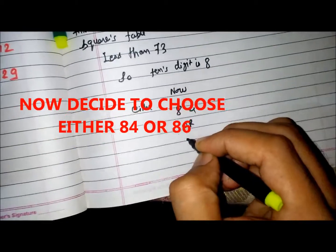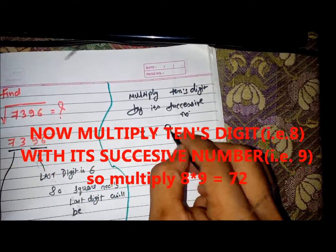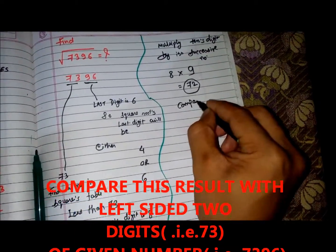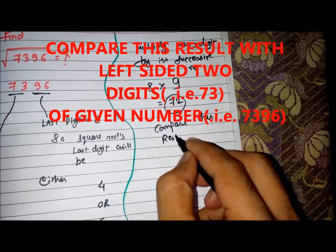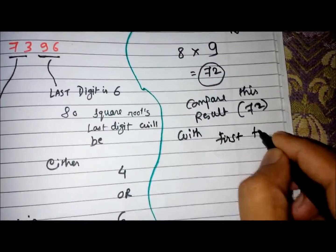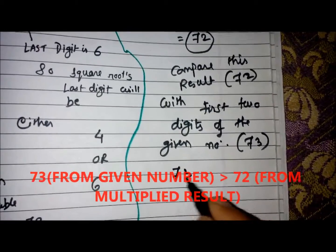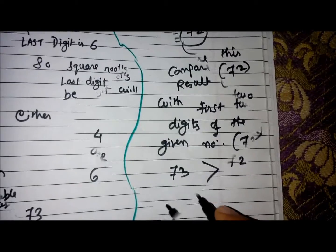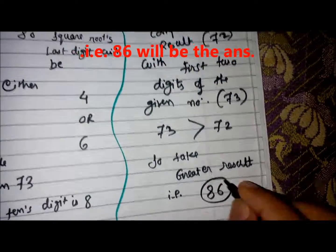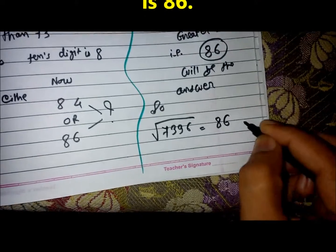Now decide to choose either 84 or 86. Multiply the tens digit — that is 8 — with its successive number, that is 9, so 8 times 9 gives 72. Compare this result with the left-sided two digits, that is 73. Since 73 is greater than 72, take the greater value: 86 will be the answer. So the square root of 7396 is 86.